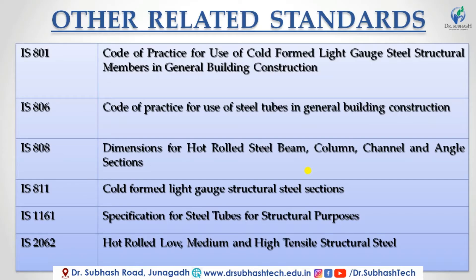After the revision of IS 800, the related standards that will also be revised include IS 801 — code of practice for use of cold-formed light gauge steel structures in general building construction; IS 806 — code of practice for use of steel tubes in general building construction; IS 808 — dimensions of hot-rolled steel beam, column, channel, and angle sections; IS 811 — cold-formed light gauge structural steel sections; IS 1161 — specification for steel tubes for structural purpose; and IS 2062 — hot-rolled low, medium, and high tensile structural steel. These are sub-codes for special structural elements, but our main code is IS 800, which is the only one in our syllabus.